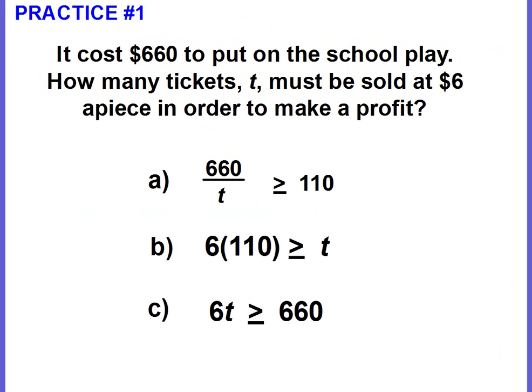Okay, let's go ahead and do a couple of practice problems. You're going to solve these on your own. You'll pause the video. When you've come up with your answer, you've written your inequality statement, come back and check to see if you are correct. So our first problem. It costs $660 to put on the school play. How many tickets T must be sold at $6 a piece in order to make a profit?